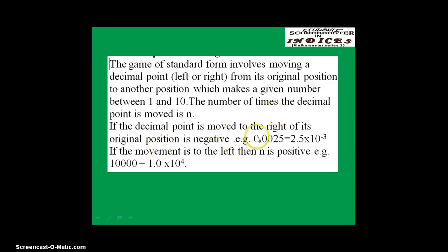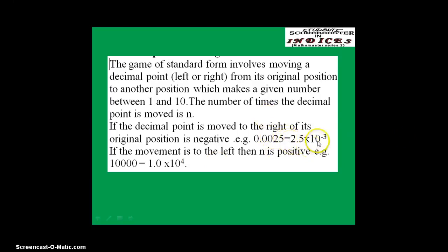For example, if I have 0.0025, if I move the decimal point 1, 2, 3 places to the right, I get 2.5, which is between 1 and 10. I have moved 3 times, that is why I have minus 3 as my n.